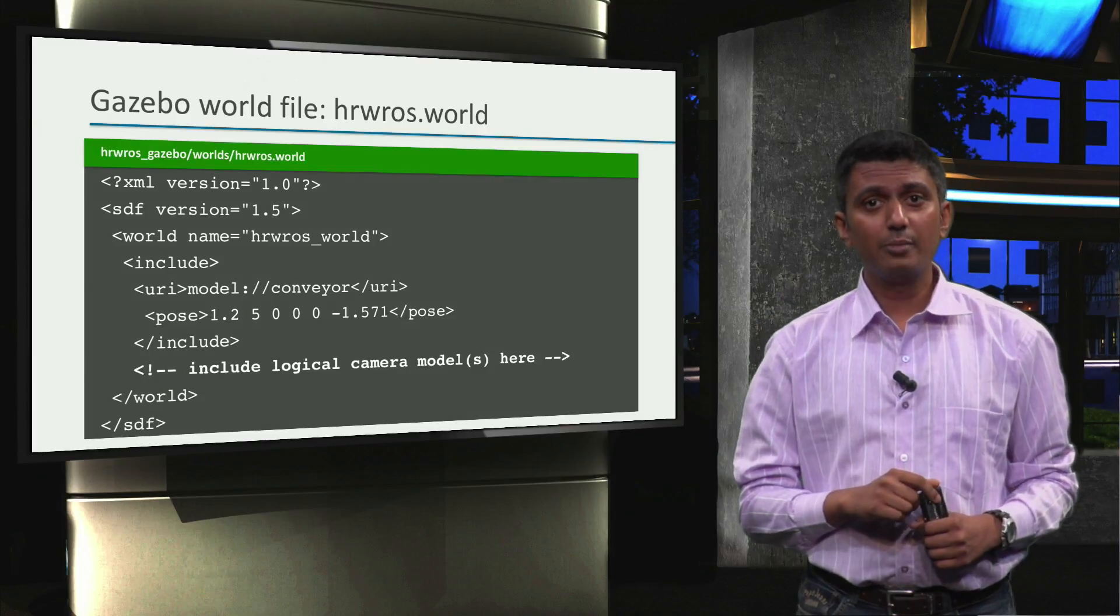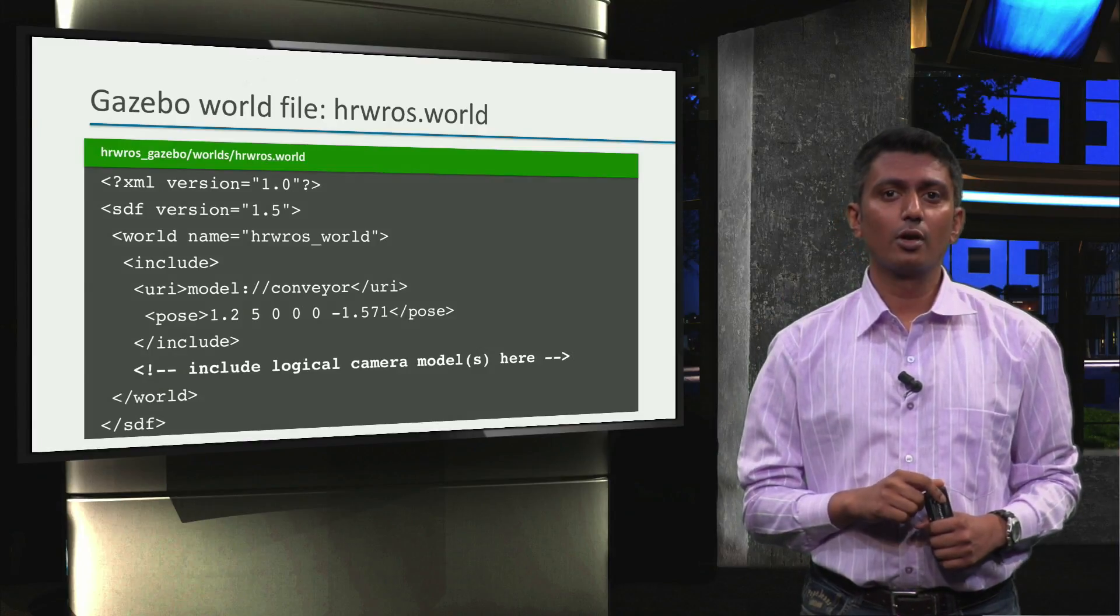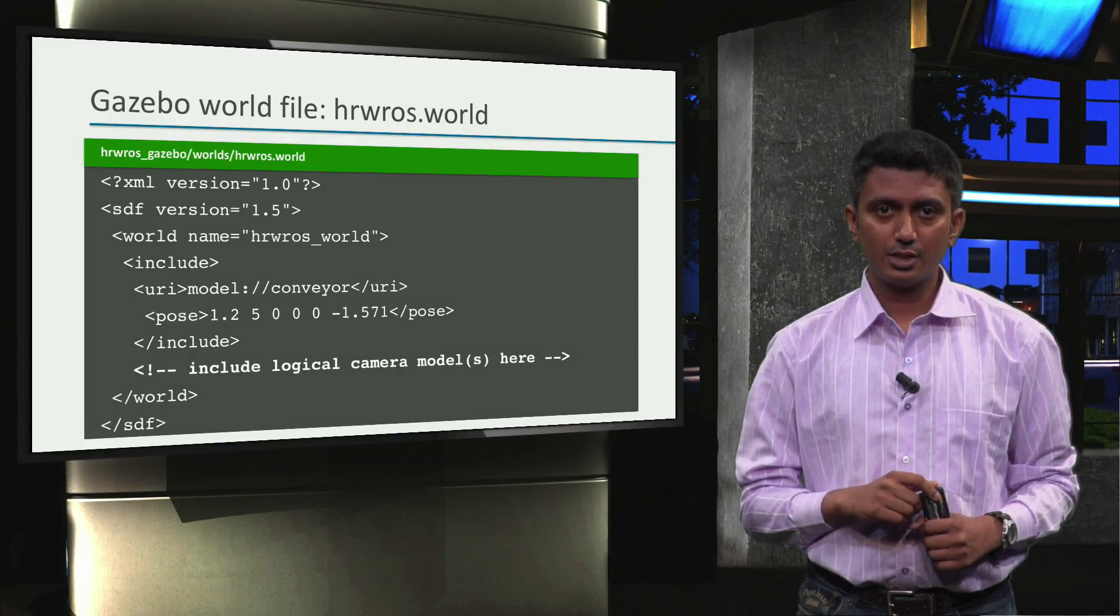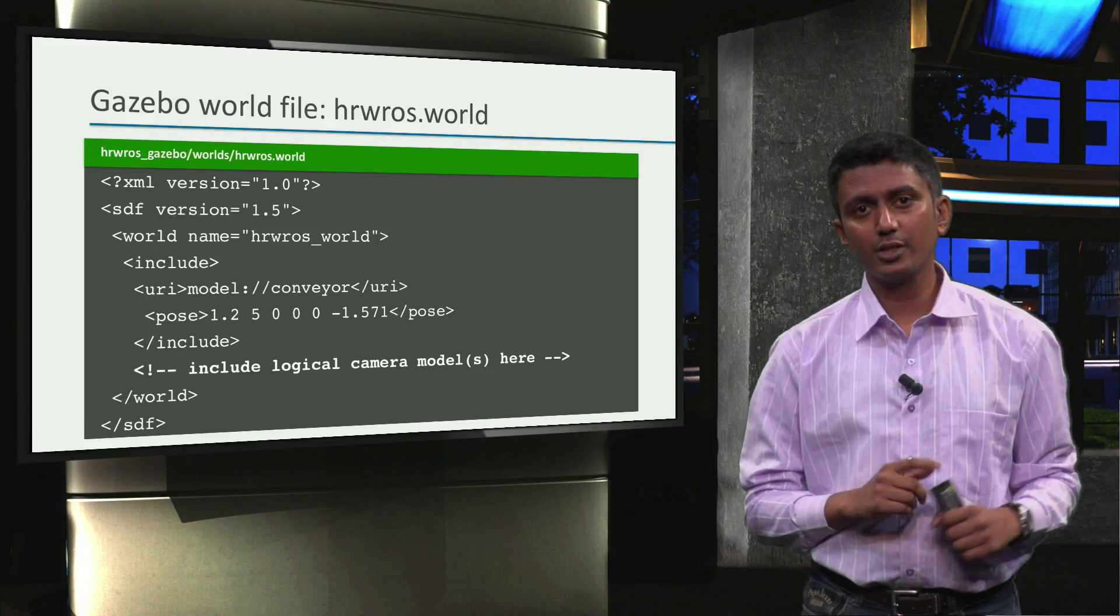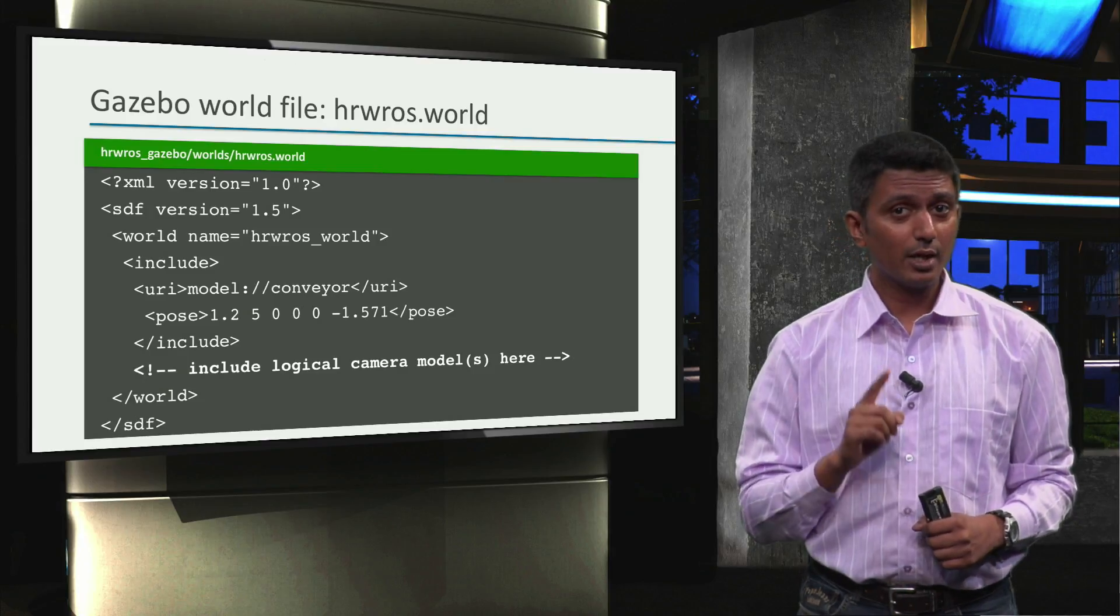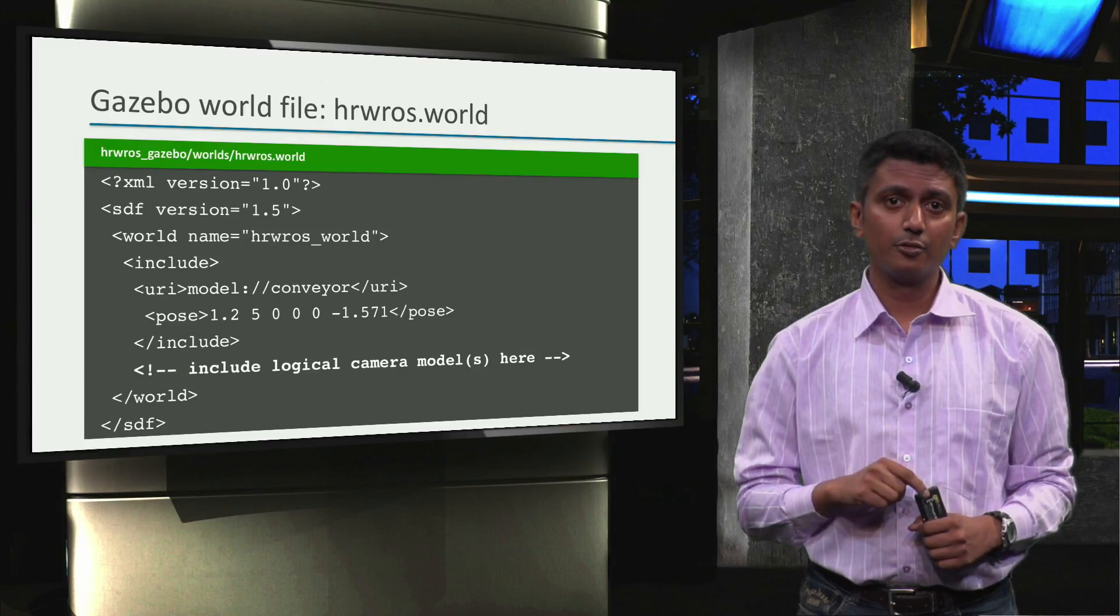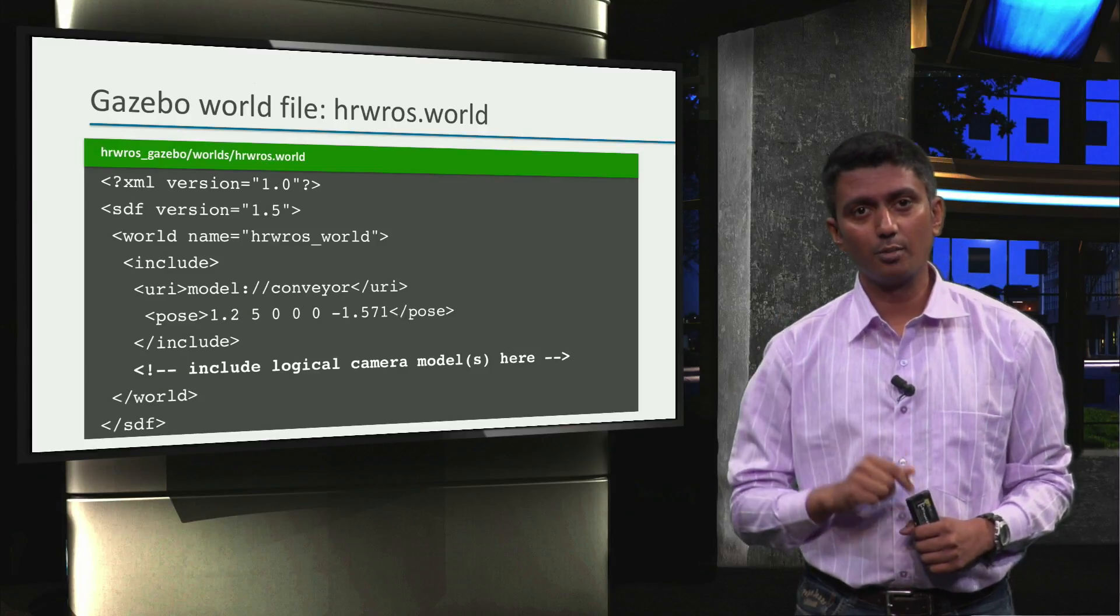And all of you will be adding the logical camera model here with the correct pose and orientation such that it appears as we saw in the previous video. Not only one, you will add two of them. One near the second robot for planning the pick pose of the object which will be on the turtlebot.